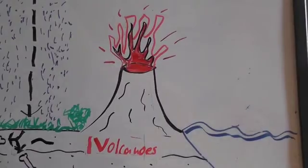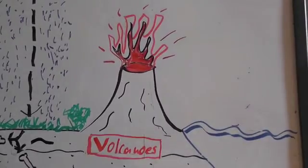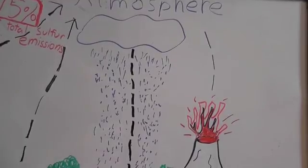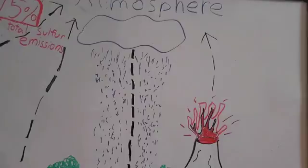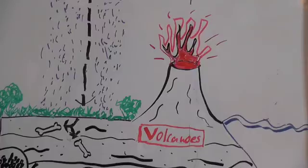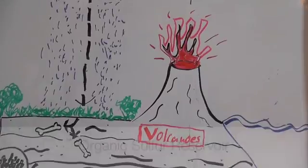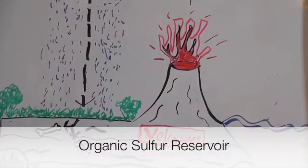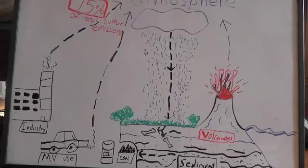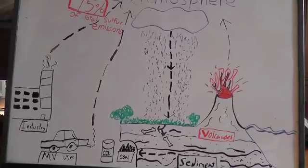Another significant contributor is volcanic eruptions. When volcanoes erupt, they release massive amounts of sulfur into the air which enters the atmosphere. The sulfur stored in a volcano before it erupts is a large organic reservoir of sulfur. Sulfur also enters the atmosphere from dust storms, sea spray, and forest fires.